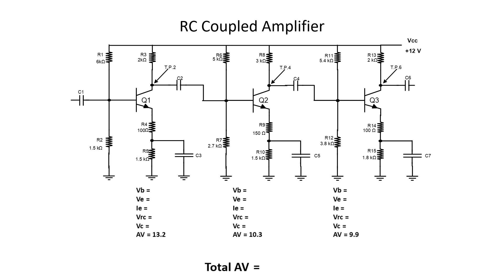For the RC coupled amplifier, notice that it's three common emitter circuits connected together. Stage one is Q1 and all of its components; Q2 and all of its components for stage two. This wouldn't be an advanced electronics college-level class without a little mathematics. Just like you solved on day two for the common emitter amplifier circuit, we need to figure out some voltage readings. Let's start with figuring out the voltage on the base — we're going to take the 12 volts and divide it by R1 and R2's total resistance, then multiply that value by R2's value, which should give you 2.4 volts.